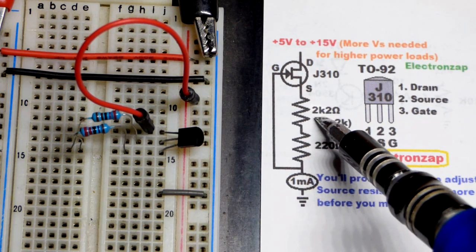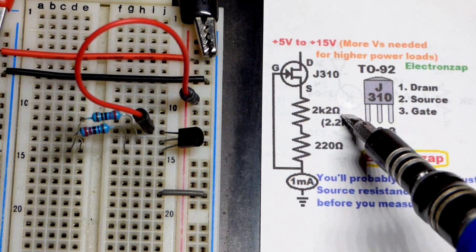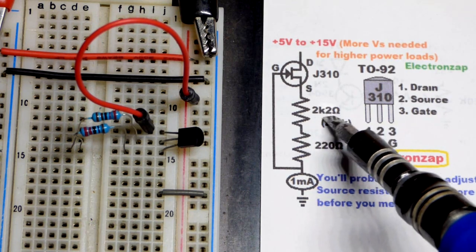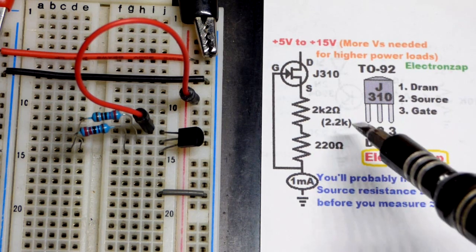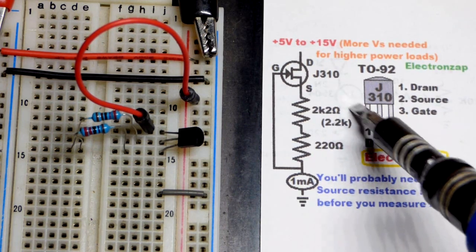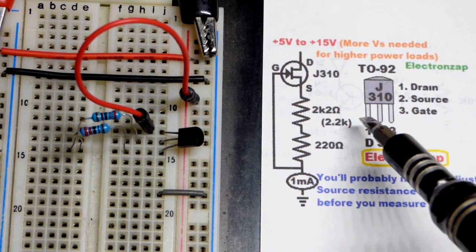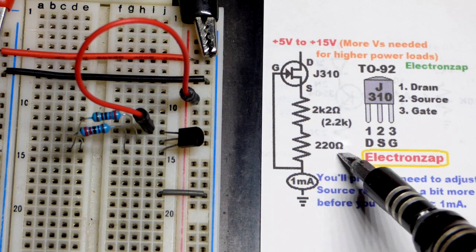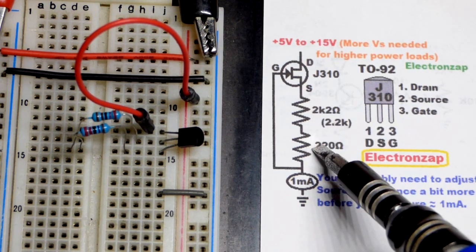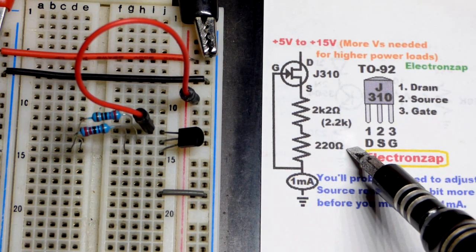So I found that using a 2200 ohm resistor, which you may see as 2K2 because it's hard to see the decimal point, or a 2.2K. They don't always include the Omega when you got that K for kilo. I put that in series with 220 ohms for a total of 2,420 ohms.